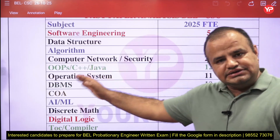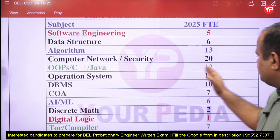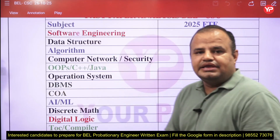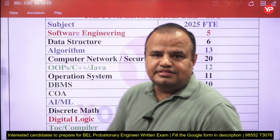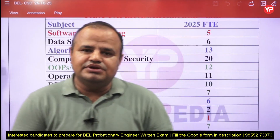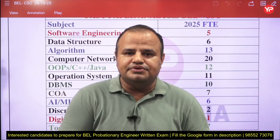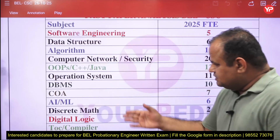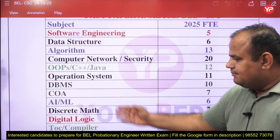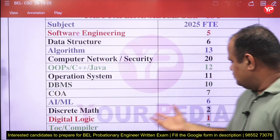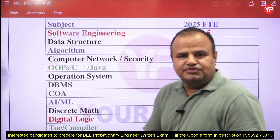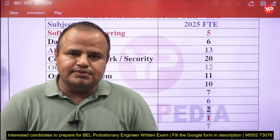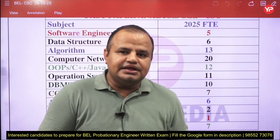OOP, C++, Java, and C programming have about 12 questions, and operating system has 11. So majorly the paper is covered by algorithm, data structure, networking, OS, and DBMS. They also include some questions from AI, ML, and data warehousing — hardly 5% weight, so you can expect about 5 problems from these new-era technology subjects out of 100 questions.